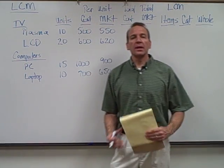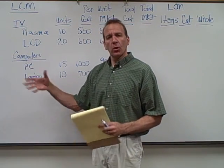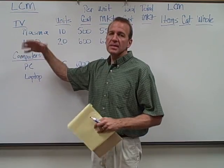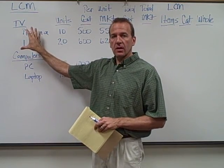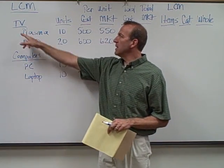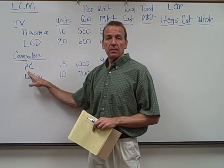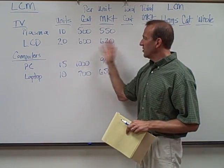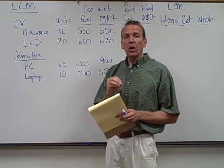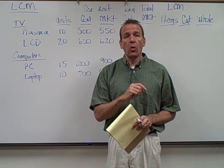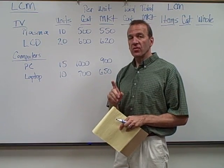Let's continue on with the chapter. We're looking at Lower of Cost or Market now, looking at the inventory items. This electronic store has lots of different items — two categories: TVs and computers, with plasma and LCD TVs, and PCs and laptops. With inventory, we always carry our inventory at the lower of the cost or the current market value of the item. There are different methods for how we do this.